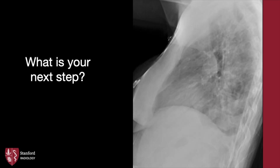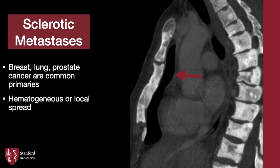What is your next step in this patient? The sternum is difficult to see from overlying artifact, but note all the bones demonstrate increased density. Our next step is to get a CT. Here, there are diffuse sclerotic metastases. Breasts, lung, and prostate cancer are common primaries. Always keep a high index of suspicion for malignancy whenever you detect a sternal lesion.